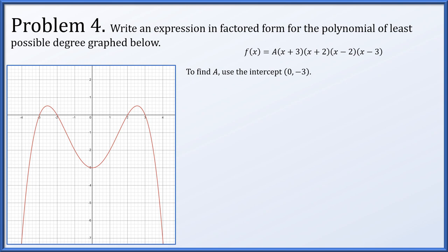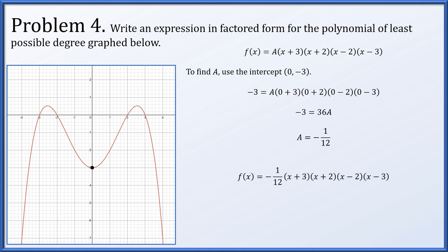To find the constant, we use the y-intercept visible on the graph at (0, −3). Setting x = 0, we need −3 = a(3)(2)(−2)(−3). Multiplying those out gives −3 = 36a, so a = −1/12. Therefore f(x) = −(1/12)(x + 3)(x + 2)(x − 2)(x − 3) is the polynomial of smallest degree matching the roots and intercept.